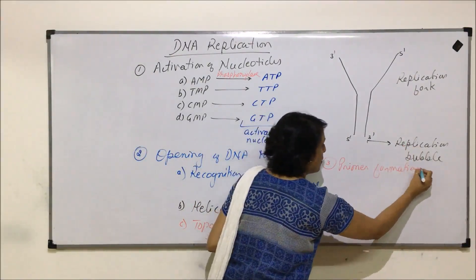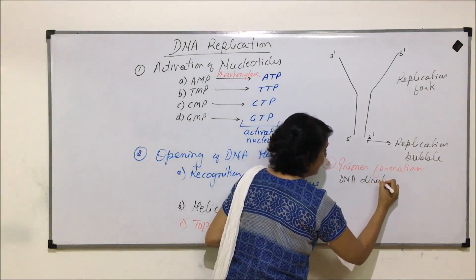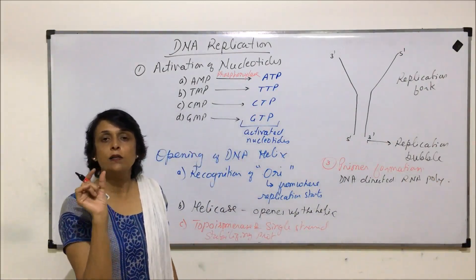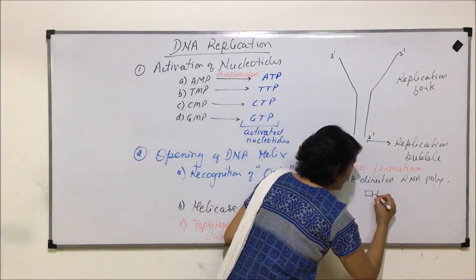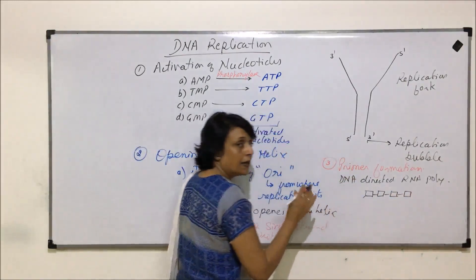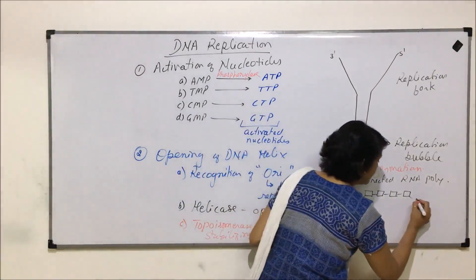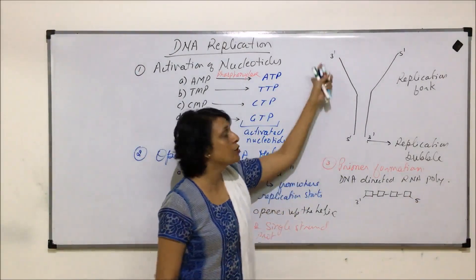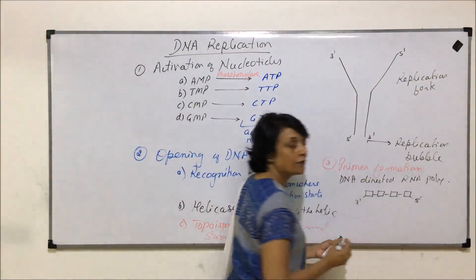The enzyme required for primer formation is DNA-directed RNA polymerase. The primer is a small segment of RNA nucleotides — maybe six, seven, or eight nucleotides long. Like DNA or RNA in general, it shows polarity: one end has the 3 prime OH free and the other end has the 5 prime phosphate group free.